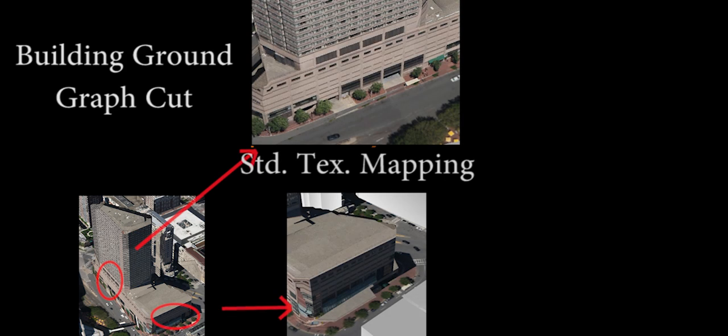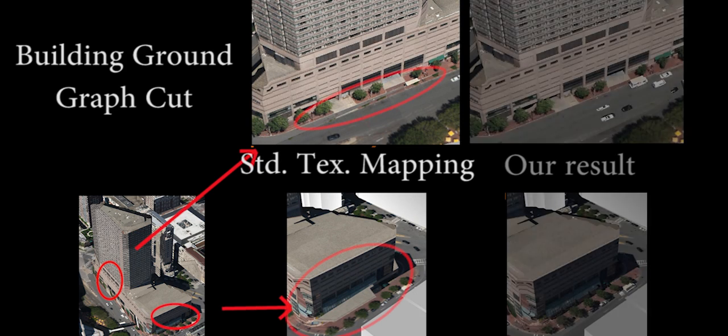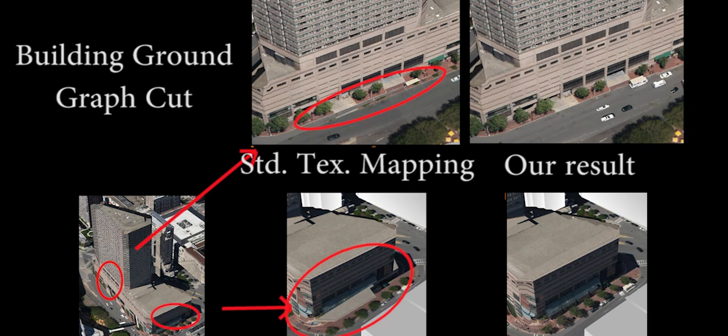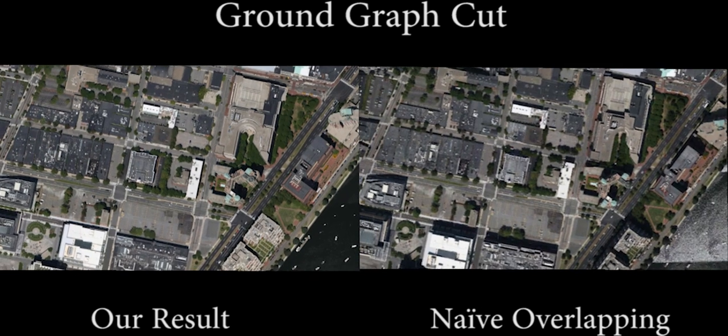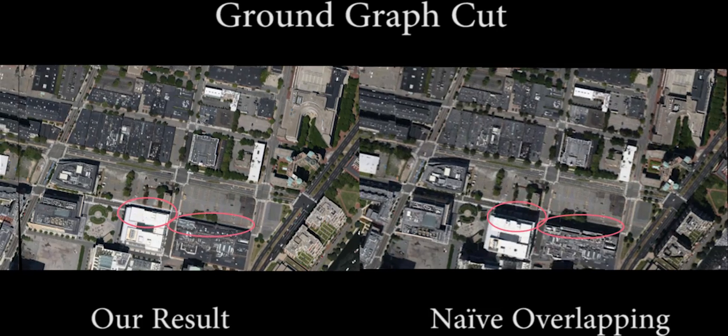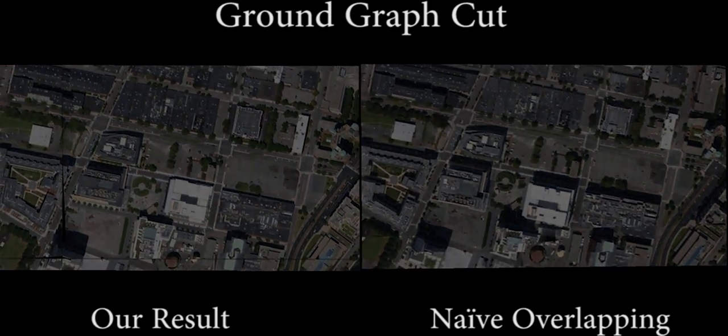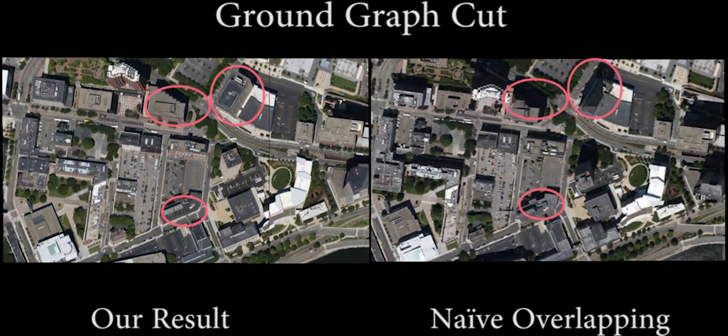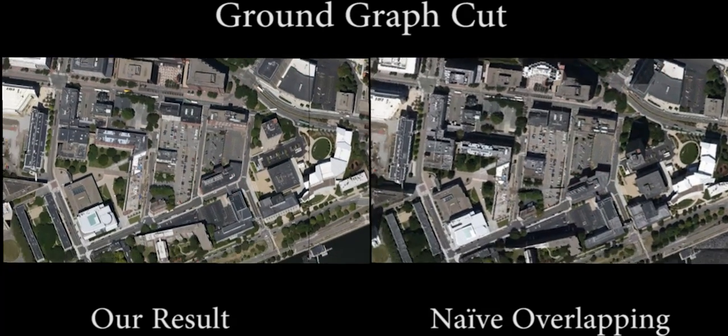We also calculate building-to-ground surface graph cuts to compensate for the visual discontinuities between the ground and the building. To produce an improved top-down view of the ground surface, we use another surface graph cut algorithm that avoids the presence of building projections and image discontinuities.